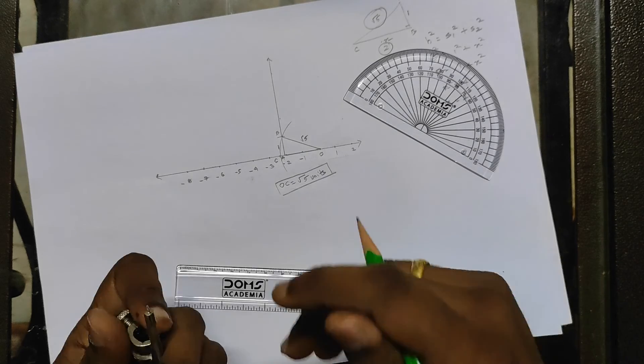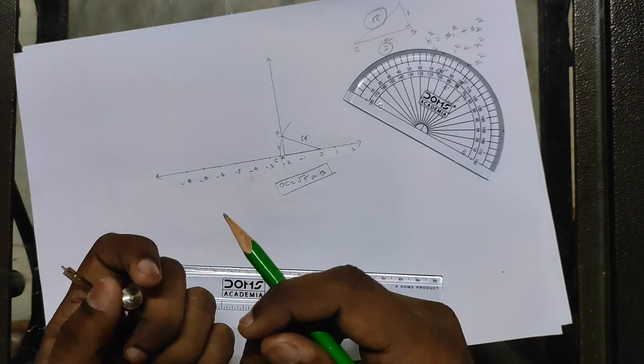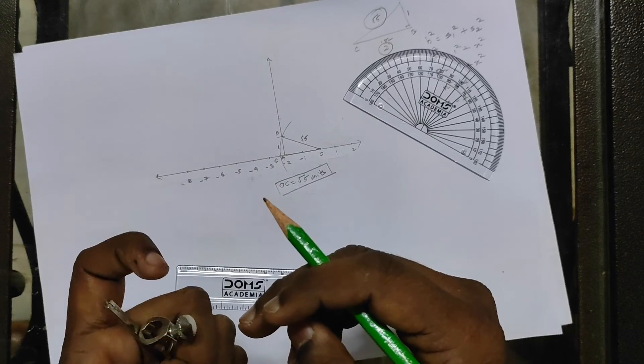Okay, now represent root 7 on a number line. So I want you to try it by yourself. Okay, bye.